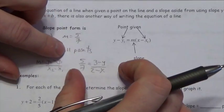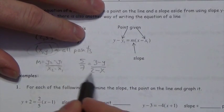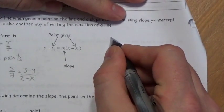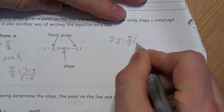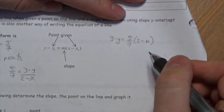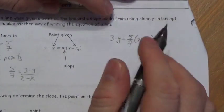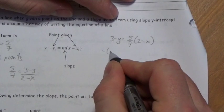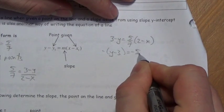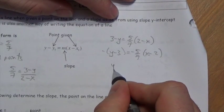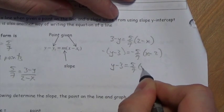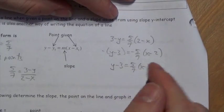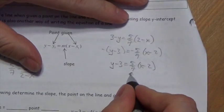I'm going to rearrange this by multiplying up, so 3 minus y equals 5/7 times (2 minus x). Then, factoring a negative out from both sides: y minus 3 equals 5/7 times (x minus 2). We consider this to be the point-slope form of the equation of that line. There's my slope — 5/7 — and my point — (2, 3).